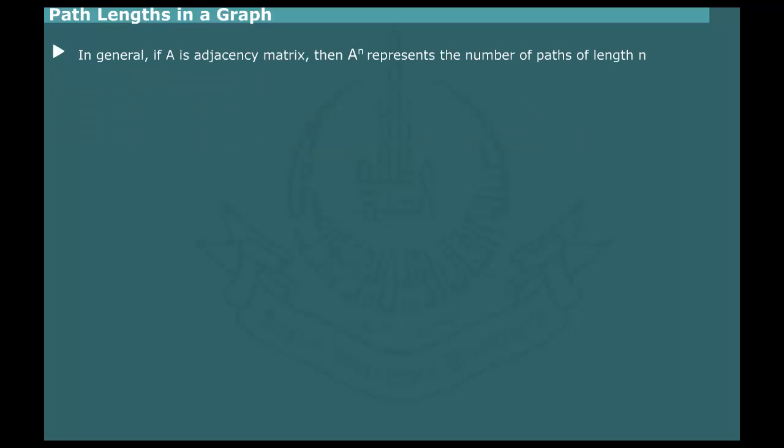It can be shown that if A is the adjacency matrix, then, in general, A raised to the power n represents the number of paths of length n between different pairs of vertices of a graph. For example, A cube would tabulate the number of paths of length 3.